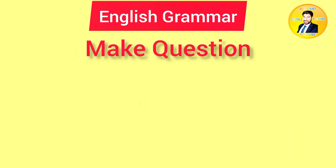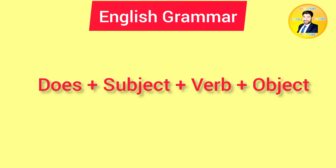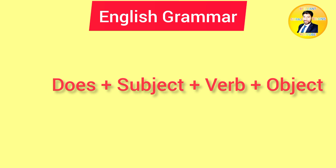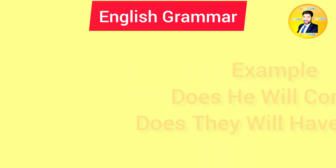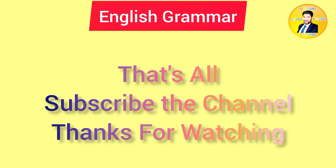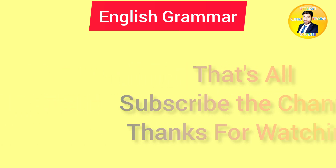Make question — formula: does plus subject plus verb plus object. For example: does he will come? Does they have book? So we can use all like this. That's all and thanks for watching.